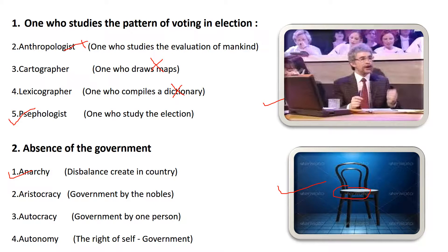The second is: absence of government. Anarchy is the right answer — it means when the government is not present, a great imbalance is created in the country. You can understand this word with the picture shown here: a vacant chair is shown, representing that the government is not present. That state is called anarchy.